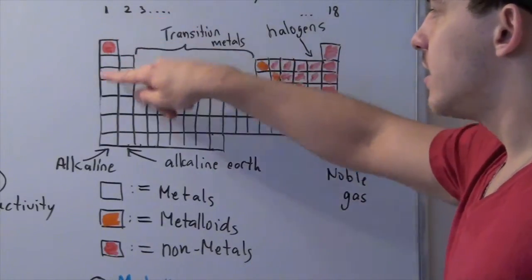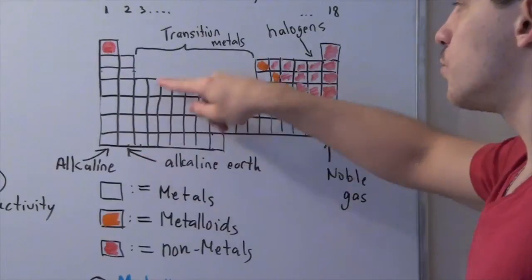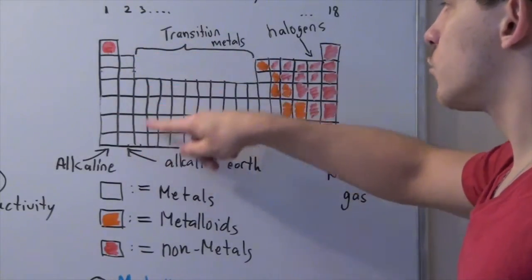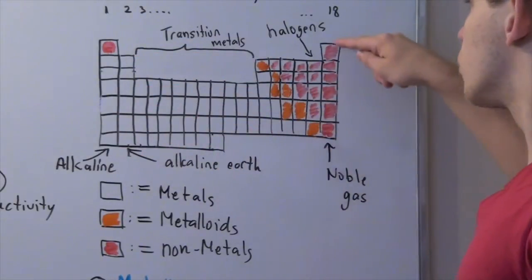Now, these guys, these columns, are known as groups. So, group 1, group 2, group 3, group 4, all the way up to group 18.